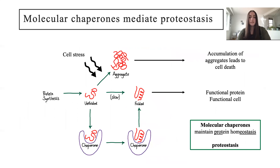These molecular chaperones are important for maintaining cell protein homeostasis. They fold proteins into their functional conformations and prevent toxic aggregates. An imbalance in this process, which can be induced by cell stress such as high external temperatures, leads to the accumulation of toxic proteins and programmed cell death. In order to counter this, cells undergo the heat stress response, where chaperones are upregulated in order to promote cell survival.